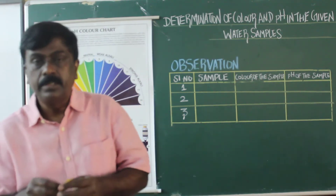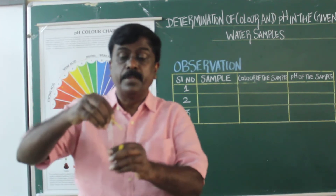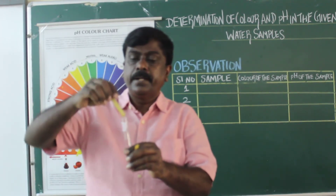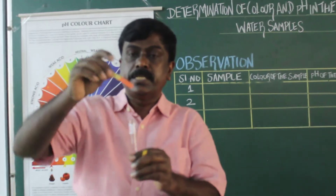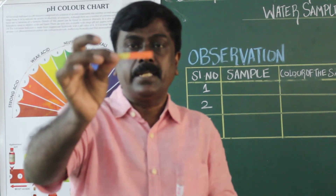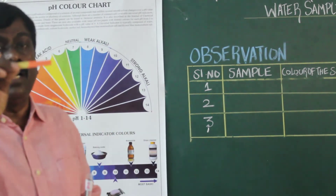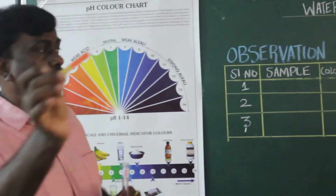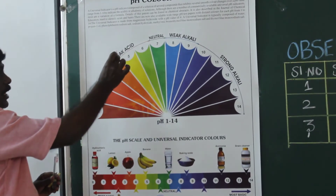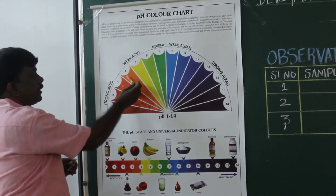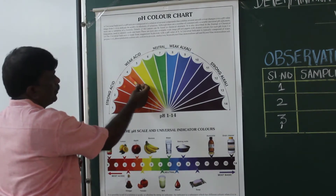Next, take the pH paper and first take the test tube from letter 1 and dip that paper. You can see a color change which shows the orange color. Now take this pH paper and compare it with the pH color chart — it comes nearly to pH 4.